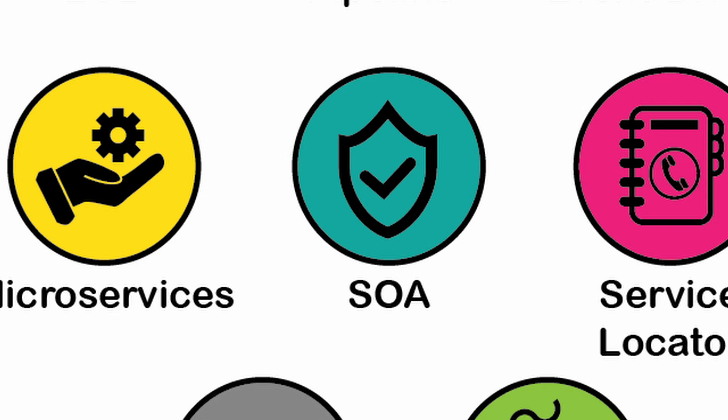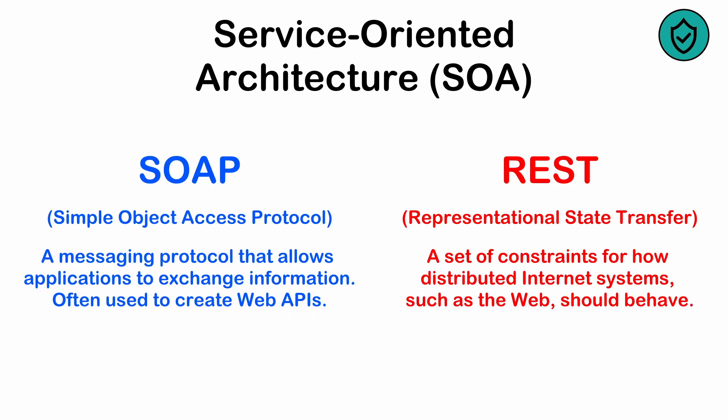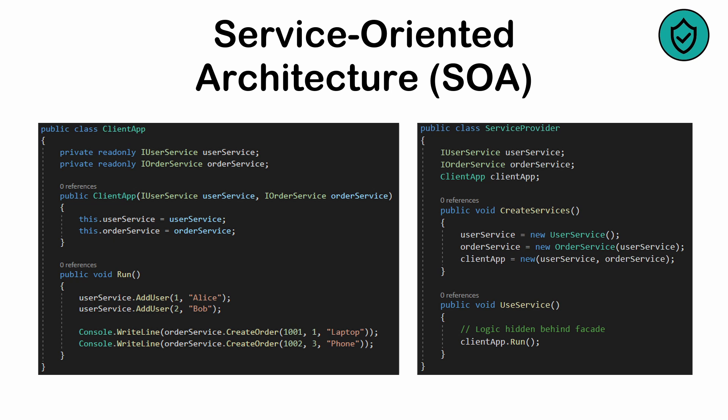Service-oriented architecture. This approach structures applications as a collection of services that communicate through a common protocol, such as SOAP or REST. This pattern is useful for creating modularity and cross-platform communication, but adherence to rigid protocols can often make this pattern less flexible. It shares many of the same strengths and weaknesses as the microservices pattern.